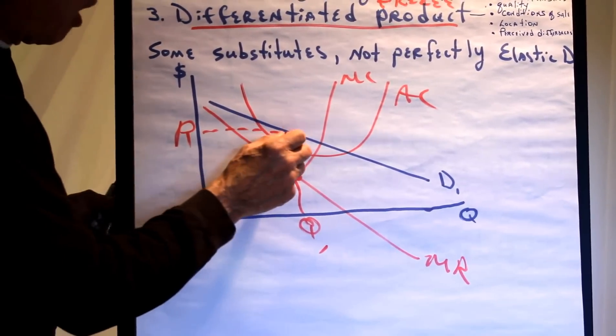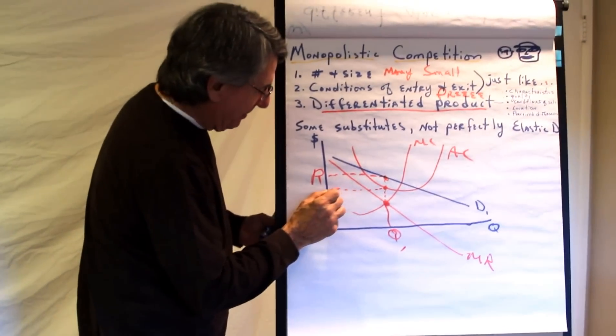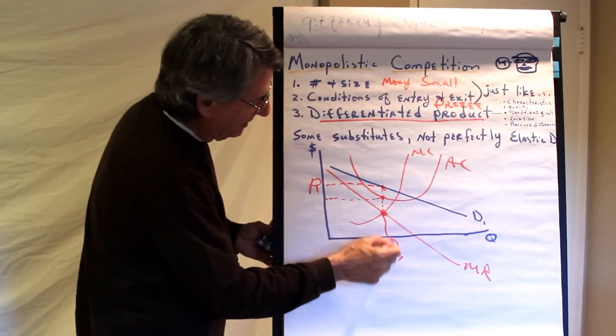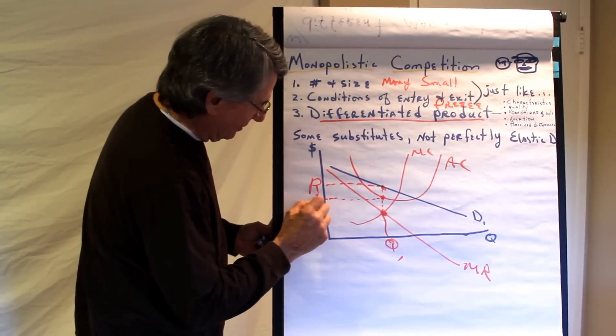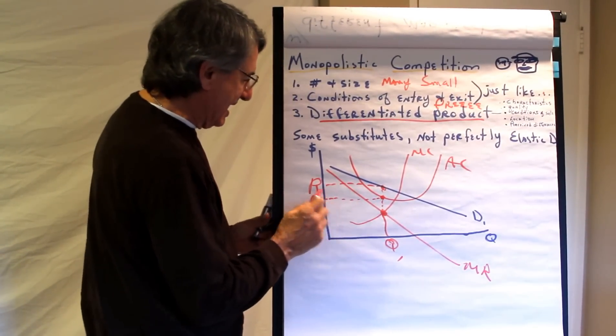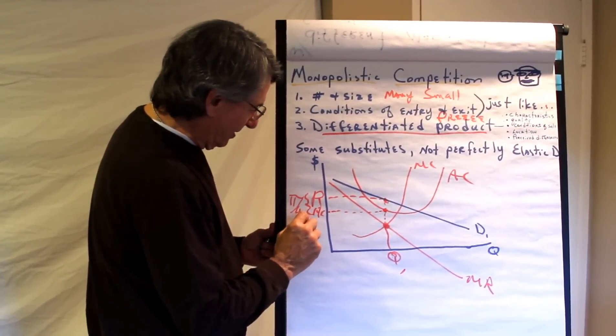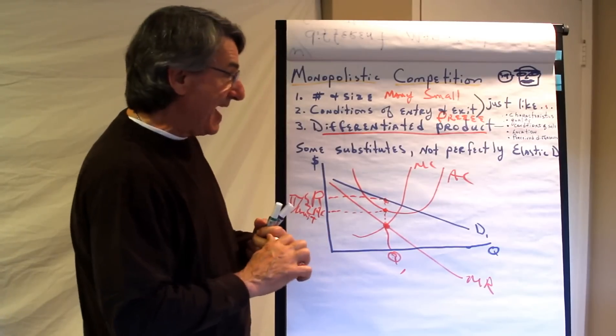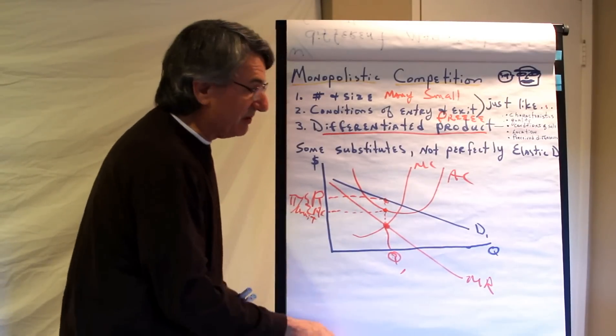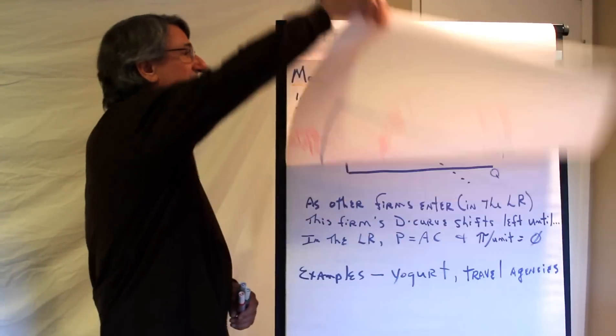That's right. You got it. Good job, Fonz. Now, in this example, you see that this point, when they produce this quantity, that point tells you the average cost of producing this many units. So this difference right there is the profit per unit. So this firm is making a profit. But in the long run, will this profit continue to exist? No!